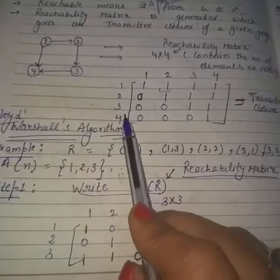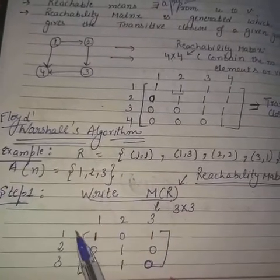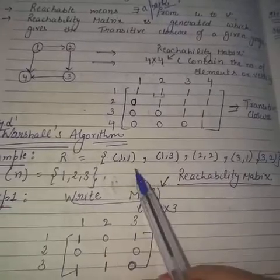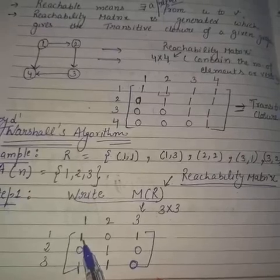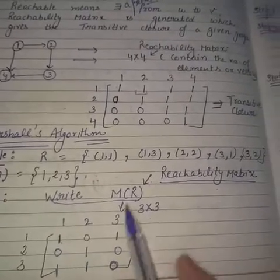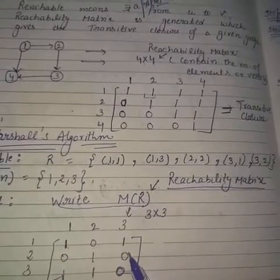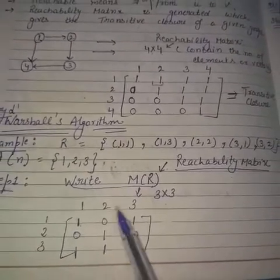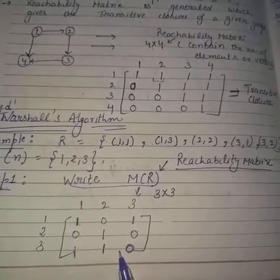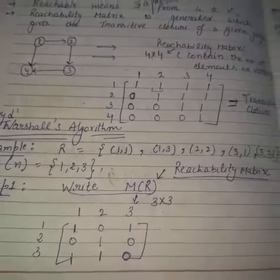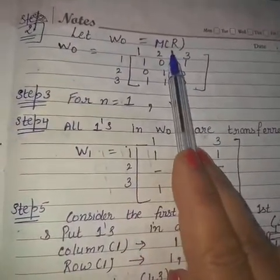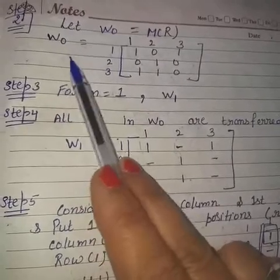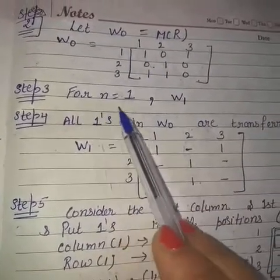The reachability matrix is created as a 3×3 matrix, same as before. To create the matrix, we check which relations exist: (1,1) exists → 1; (1,2) does not exist → 0; (1,3) exists → 1; (2,1) does not exist → 0; and so on for all entries. Now the reachability matrix is created. The next step is: let W0 equal the reachability matrix — assign W0 the value of the reachability matrix.